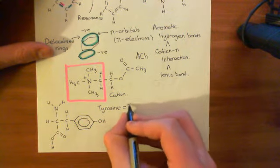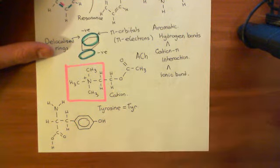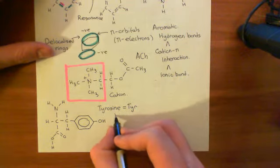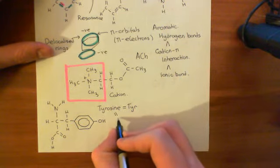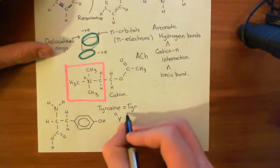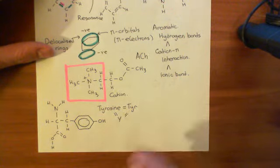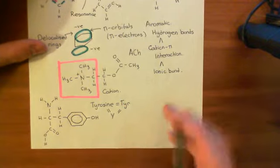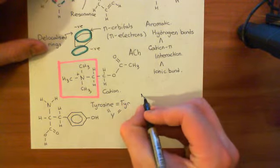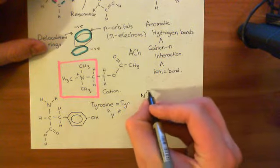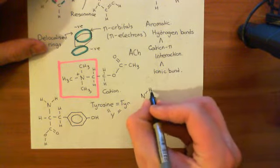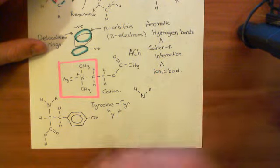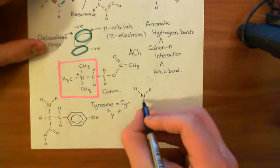Tyrosine is also denoted by TYR as its three-letter amino acid code, and its single letter amino acid code is Y. Now let's discuss the final amino acid which is going to be important in the aromatic nest — the center where acetylcholine is going to bind.